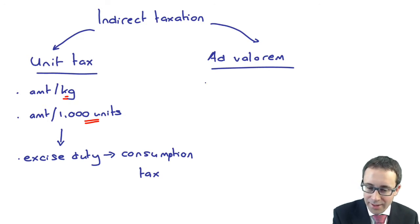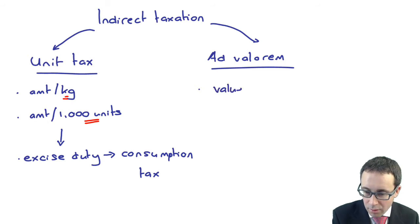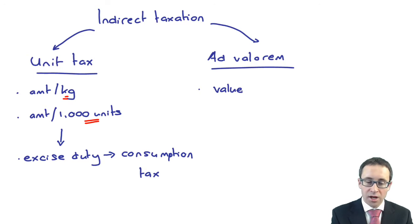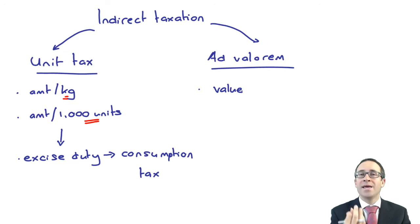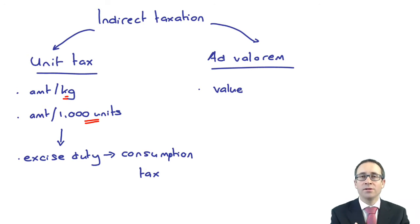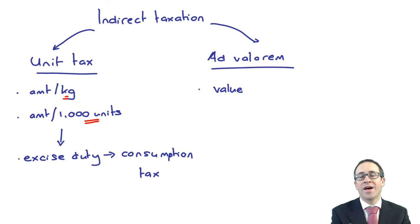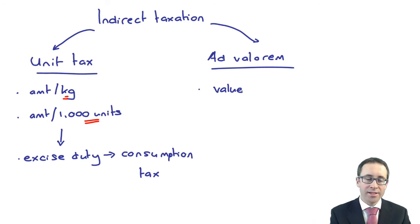Ad valorem indirect taxes are whereby it is a tax based upon the value of the goods or the value of the services. So in the UK we have sales tax, referred to as VAT. You pay not based on the kilograms or number of units — you are paying a rate of tax based upon the value of the goods. So if you buy goods that are $1,000 net of tax, with 20% on top, the total will be $1,200. So that is an ad valorem indirect tax.